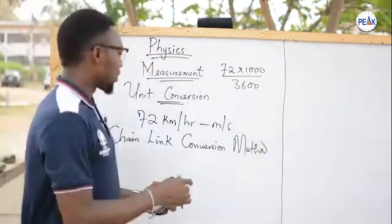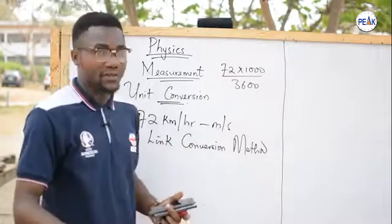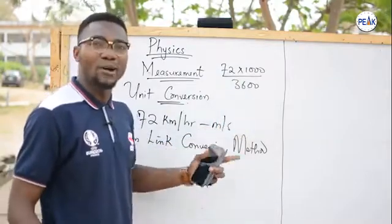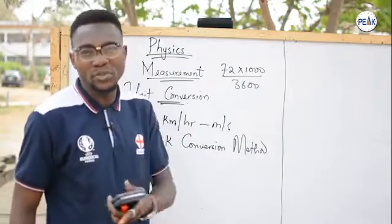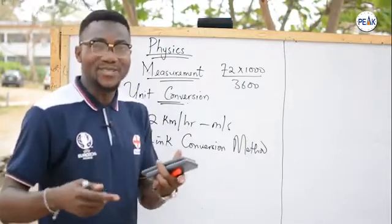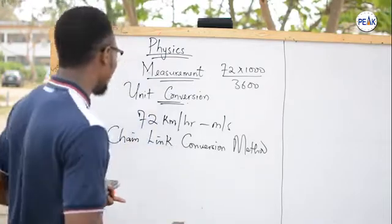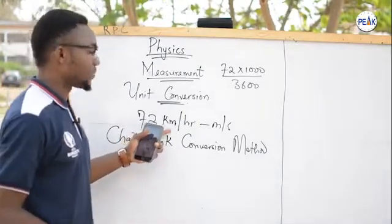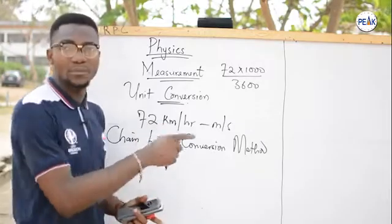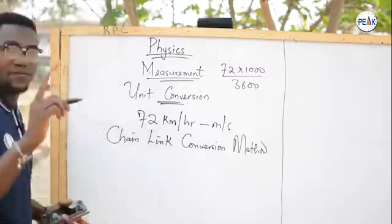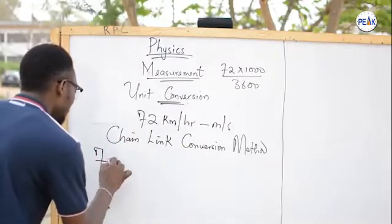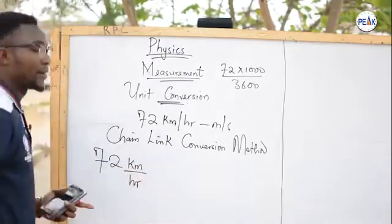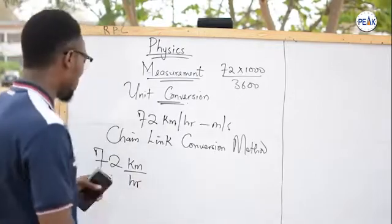The chain link conversion method is very simple. I'm going to illustrate it with this question — converting 72 km/h to m/s — so you understand how 72 × 1000 ÷ 3600 was actually obtained. We can then solve one or two more questions and I'll give you an assignment. The first step: write it out clearly — 72 kilometers per hour.